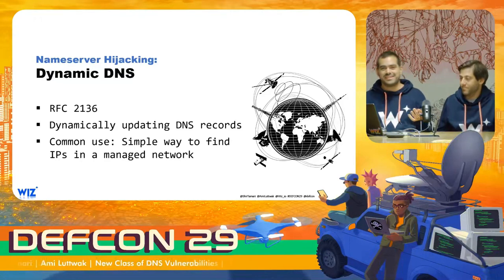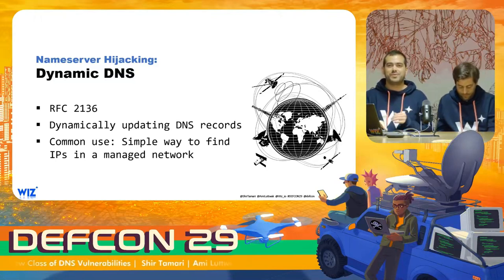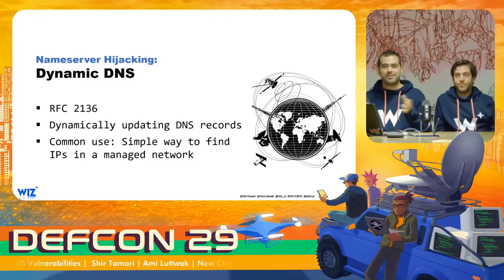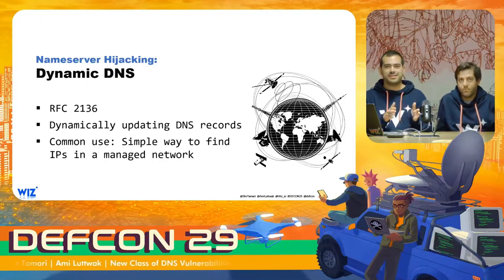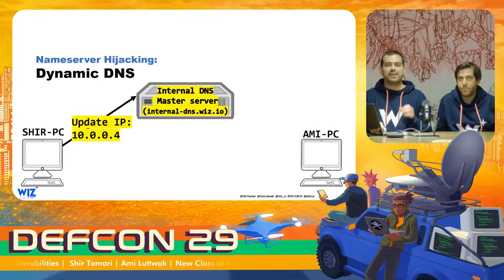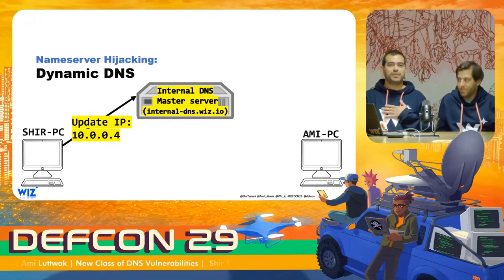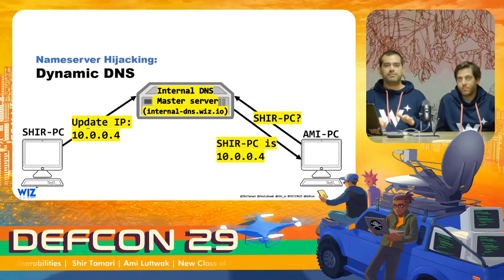So what is exactly dynamic DNS? Dynamic DNS is an extension to the DNS protocol specified in RFC 2136. It allows clients to dynamically update DNS records of a target DNS server, and it's commonly used to help devices find each other in internal Windows networks. When a Windows computer joins the company's network and receives a new IP address, it updates the local DNS server — called the master server — with its new IP address. When Ami is trying to connect to my computer, he can query the local DNS server about ShirPC, and the master server will answer with my current IP address.